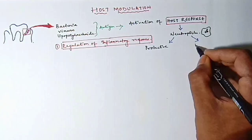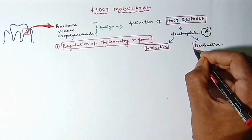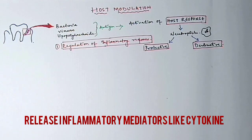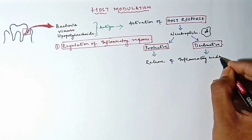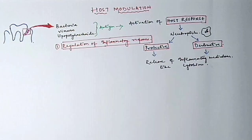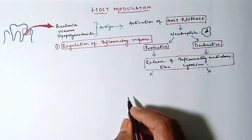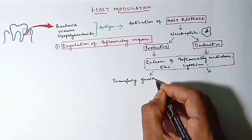They will release the inflammatory mediators like cytokines. Protective means transforming growth factors, that is TGF-alpha and interleukins 4, 10 and 12. Destructive means interleukins 1 and 6, TNF-alpha, MMPs and PGE-2.